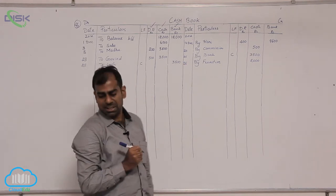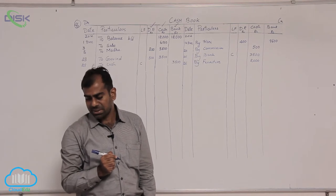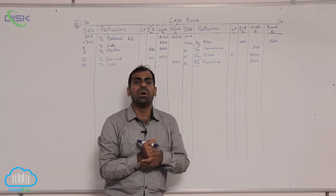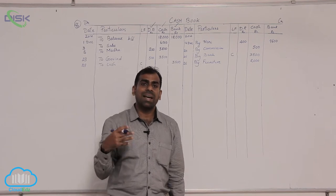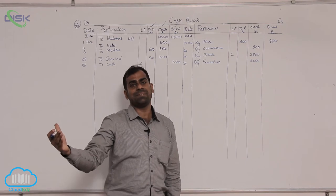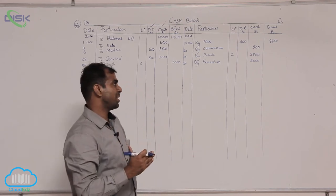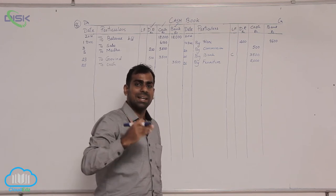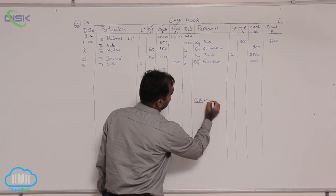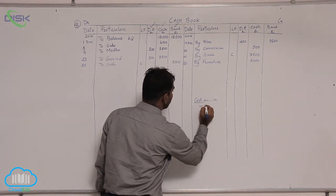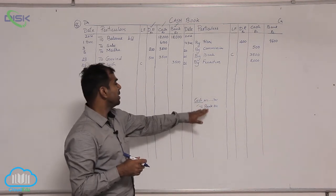The next transaction is on 28th which states that withdrawn from bank cash for office use. What you withdraw from bank is cash, and it is stated for office use — meaning you require money for your business activities. So you are taking out money from the bank and bringing it to your office. It is again a contra entry wherein both cash and bank accounts are involved. If you remember your journal entries, cash is coming in so based on the real account rule we debit cash account; bank is the giver of money so bank account is credited.